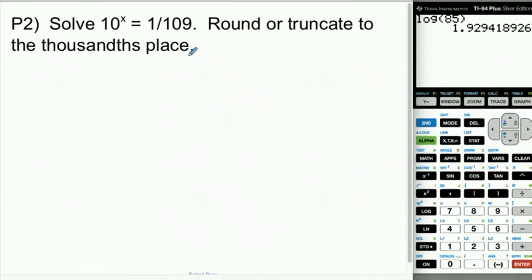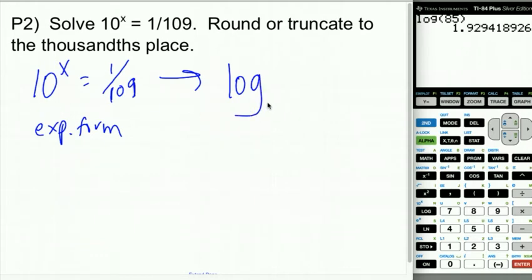Go ahead and try P2, the same idea. You have 10 to the X equals 1 over 109. We're going to rewrite that. And that is a 109, not a log. It just kind of weirdly looks like the word log. So this is in exponential form. We're going to rewrite this in log form, which is going to be log base 10 of 1 over 109 equals X.